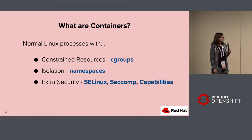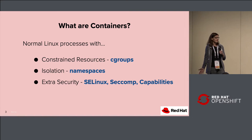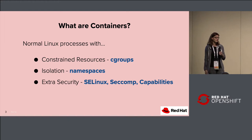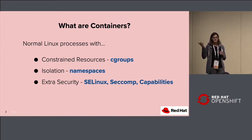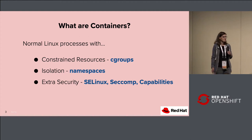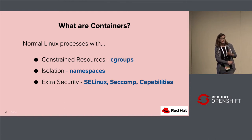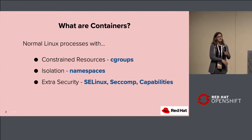A container engine then creates a runtime config — another JSON file. It creates that from user input, like any flags you pass to your container run command, like --privileged or --volume. It takes the user inputs with the container runtime system configs and knows how to launch that runtime. That's a container engine.